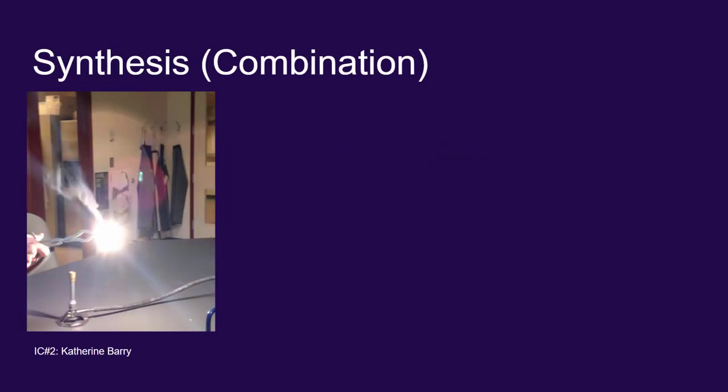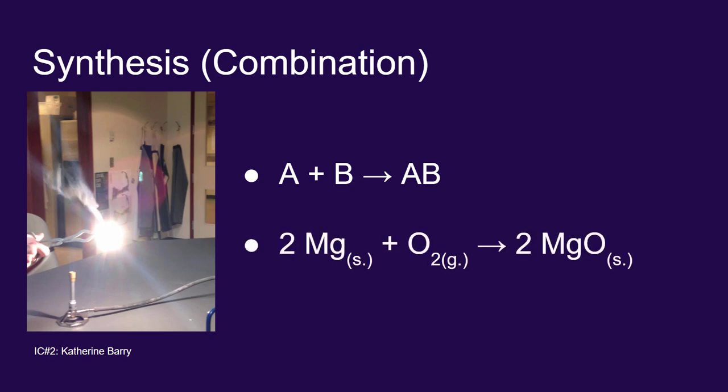The book does talk about combination reactions or synthesis reactions. As the name suggests, you're just going to be combining things to make something bigger. Generically, you can take two elements or two small compounds and bring them together to make one larger compound. On the image to the left, we have a picture of burning magnesium. When you react magnesium with oxygen, you get magnesium oxide. This was the example that we used in balancing an equation.